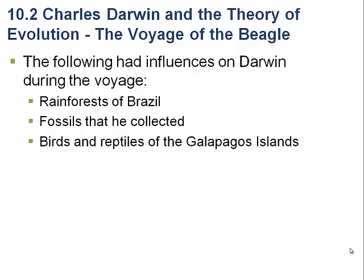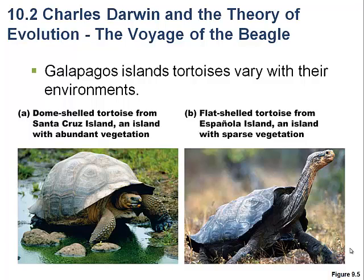Darwin visited the rainforest in Brazil and also collected fossils, although our knowledge of fossils at that time was relatively limited. But the birds and reptiles of the Galapagos Islands were one of the most significant observations he made on this journey. He saw things like giant tortoises — big turtles that live tremendously long periods of time and grow to huge sizes. What he noticed was that animals were different on different islands in the Galapagos. In the case of the turtles, the shell was different: some had a very high arched dome shell, while others had a much flatter shell.